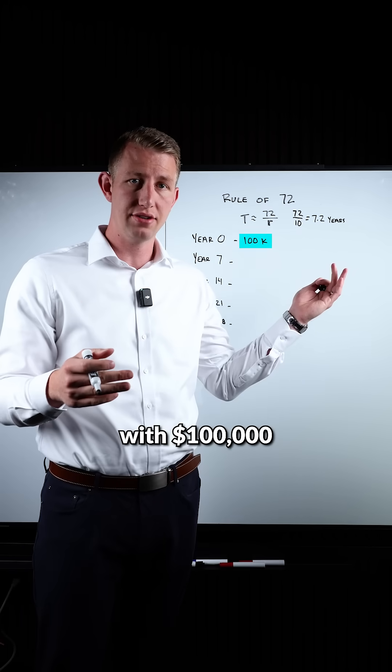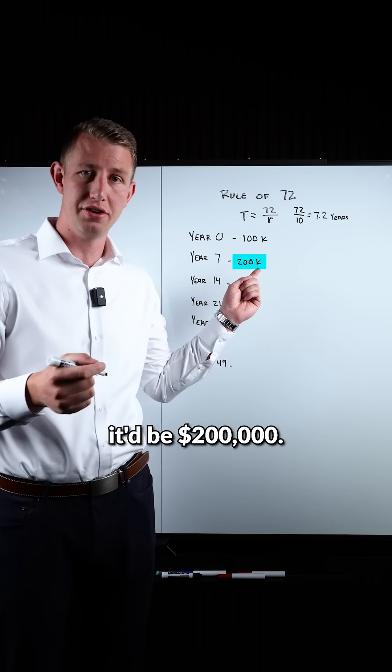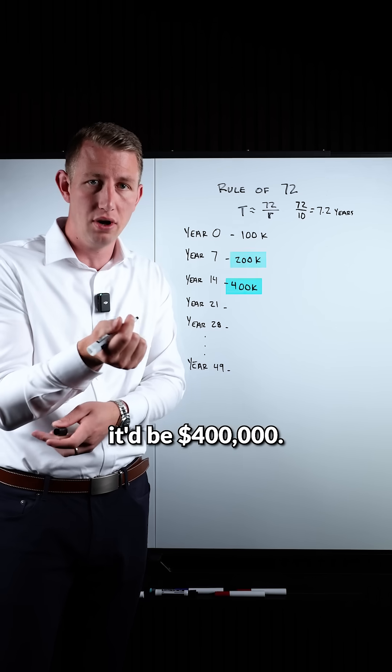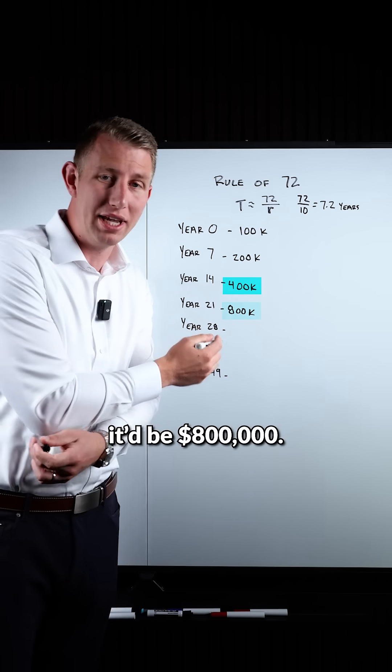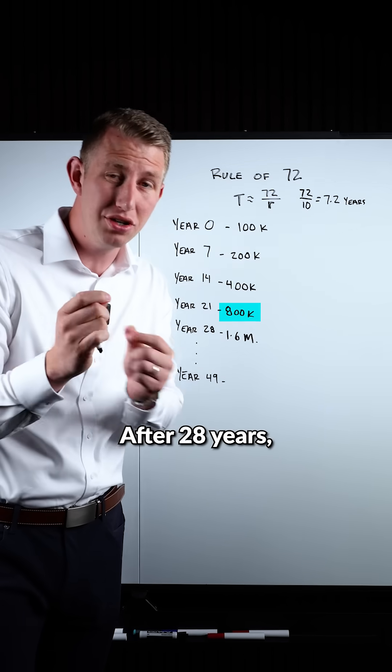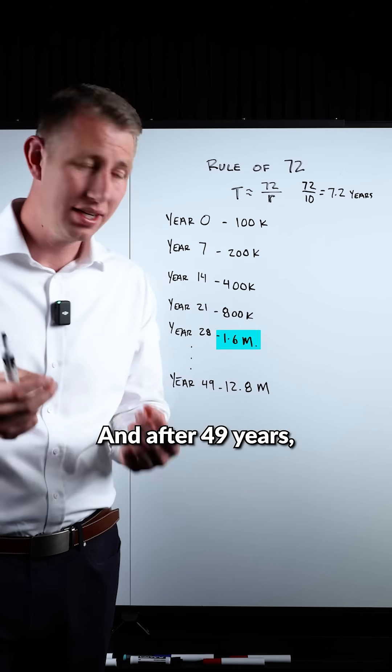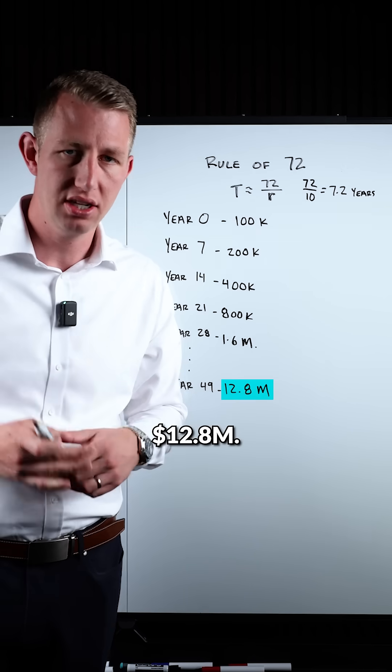If you were to start with $100,000, after seven years it'd be $200,000. After 14 years, $400,000. After 21 years, $800,000. After 28 years, $1.6 million. And after 49 years, you'd have $12.8 million.